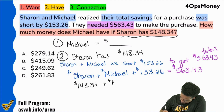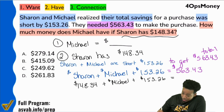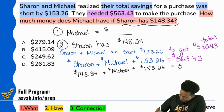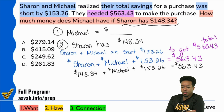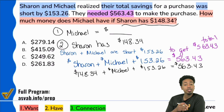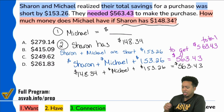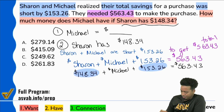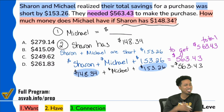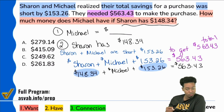Plus Michael, plus the $153.26, equals $563.43. Now, what do we do first here? We can go ahead and add the like terms. Whitney pointed out we can add $148.34 and $153.26 — those are like terms on the same side.